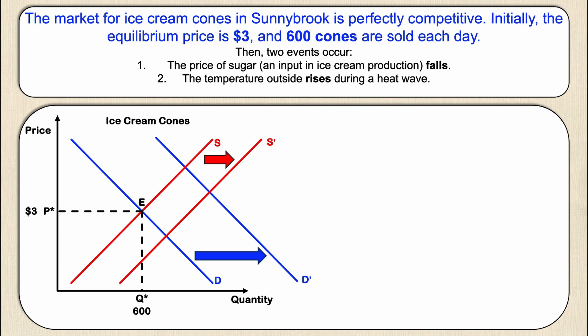There is a new equilibrium denoted as E prime, and I can label my new quantity and price at this equilibrium as P prime and Q prime respectively. Looking at this, from my original P* and Q* it appears that price goes up and quantity goes up.